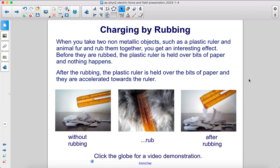After the rubbing, the plastic ruler is held over the bits of paper and they're accelerated towards the ruler. Here is a picture of before the rubbing, then we rub the ruler with the fur, and then after, you can see the paper is attracted to the ruler.